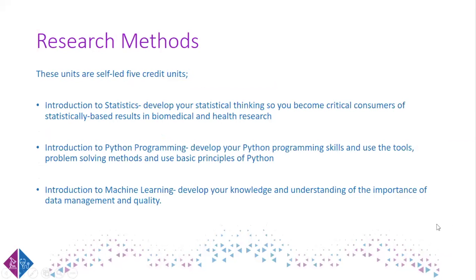New this year are three units under the Research Methods umbrella — not specific to individual areas but suited to a broader audience. These are Basic Statistics, A Gentle Introduction to Python Programming, and Machine Learning. These are five-credit, self-led and more flexible units, useful for managing your own workload while getting an introduction to the field.